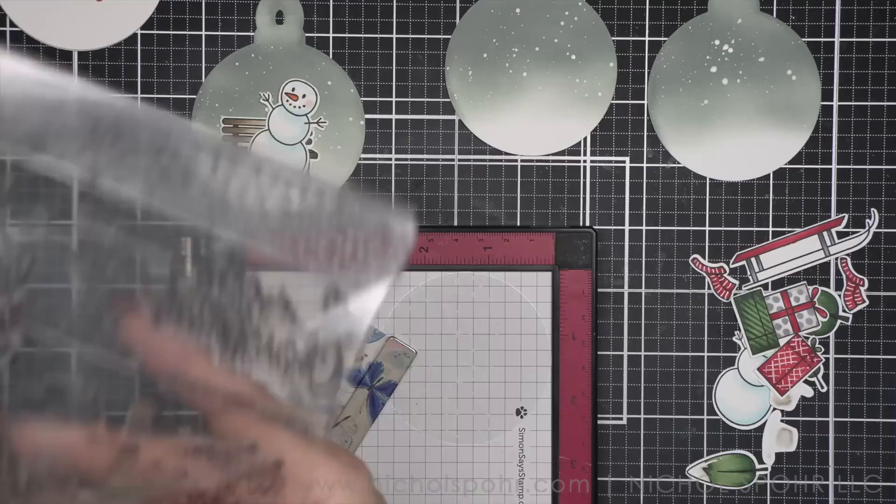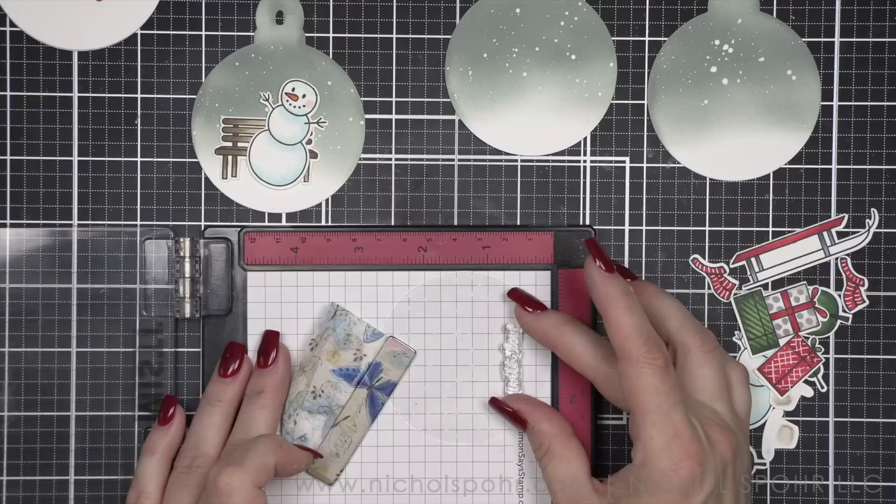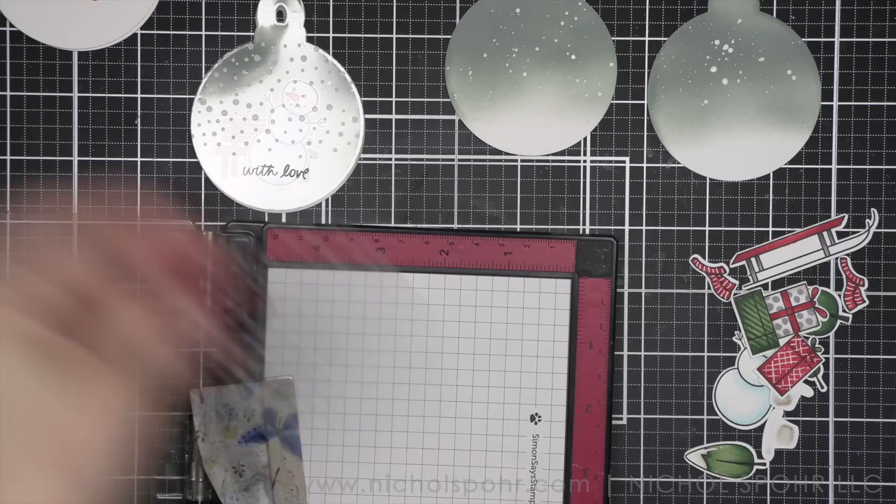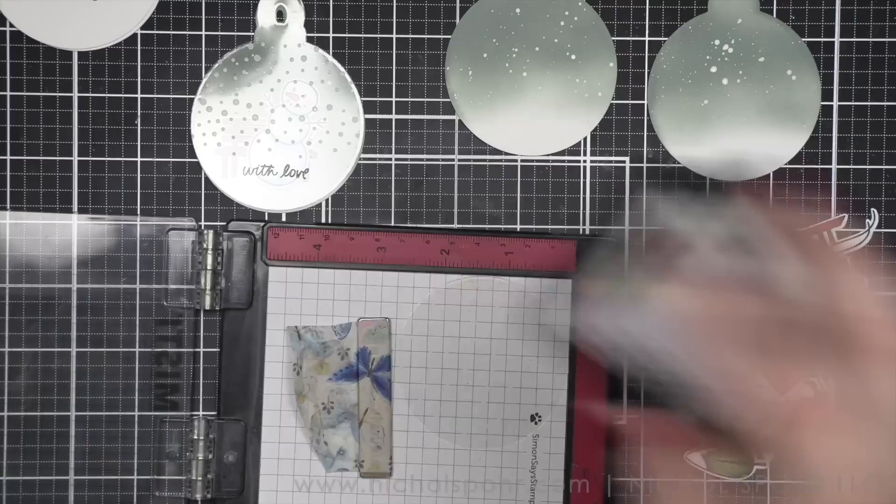I am going to take the With Love greeting from the stamp set. So on the back, we have our bigger greeting, like wishing you happy holidays from our family to yours, or season's greetings from our family to yours, or Merry Christmas, whatever the case may be. On the front, I want to have the little With Love. So I am going to stamp the With Love for each of these.